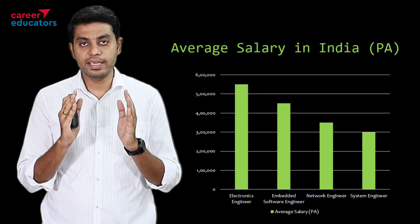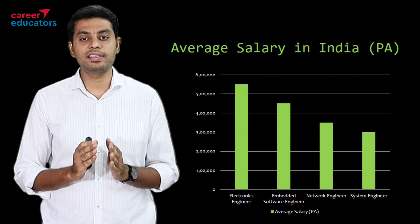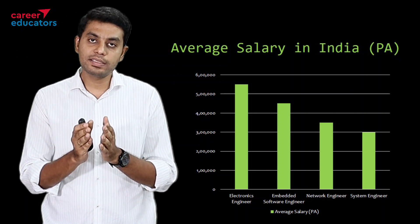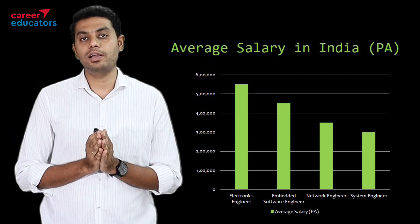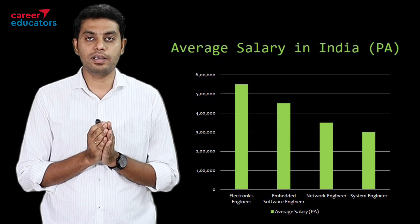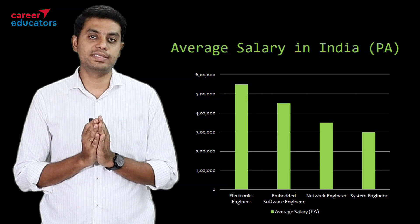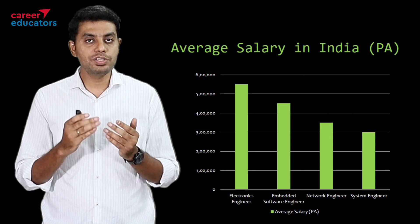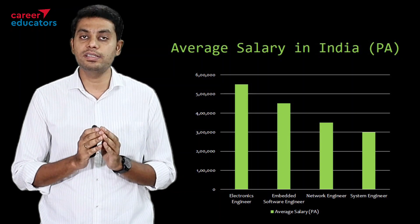If you look at the average salary in India for an EC engineer: if you join as an electronics engineer, the salary would be between 5 lakhs to 6 lakhs. For an embedded systems engineer at entry level, it would be around 3 lakhs to 5 lakhs. For a network role, it is between 3 lakhs to 4 lakhs, and for a systems engineer, it would be around 3 lakhs. Overall, entry-level salary starts from a minimum of 2.5 lakhs to 3 lakhs.